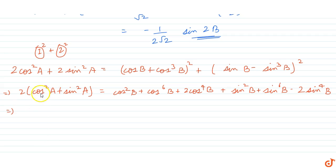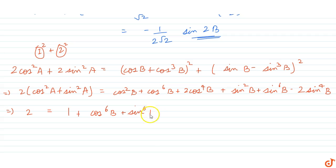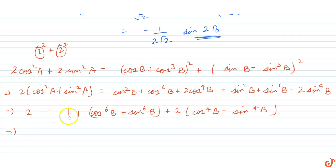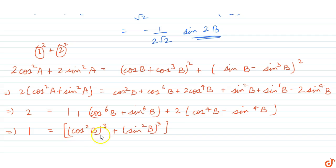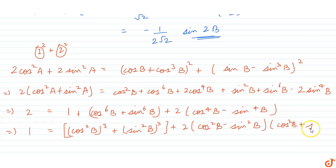Since cos²a + sin²a = 1, we get 2 = 1 + cos⁶b + sin⁶b + 2·(cos⁴b − sin⁴b). Since cos²b + sin²b = 1, simplifying gives 1 = cos⁶b + sin⁶b + 2·(cos²b − sin²b)·(cos²b + sin²b), which is 1 = cos⁶b + sin⁶b + 2·cos(2b).